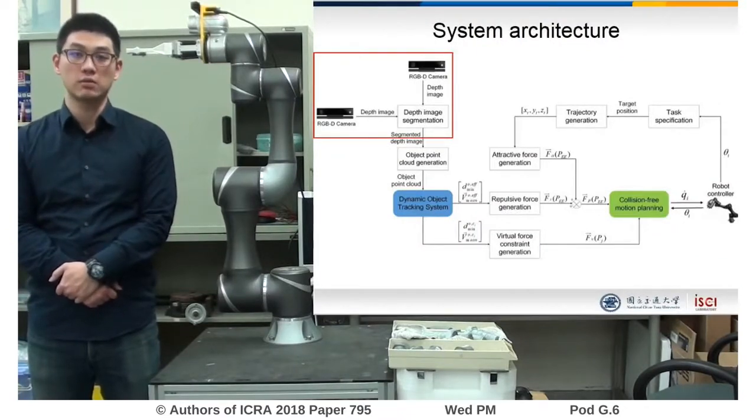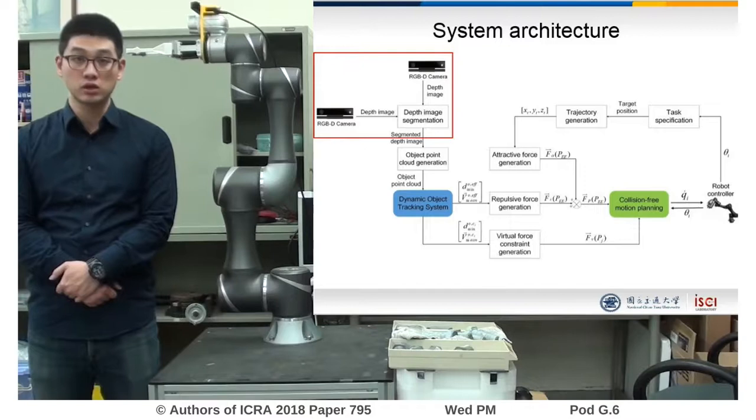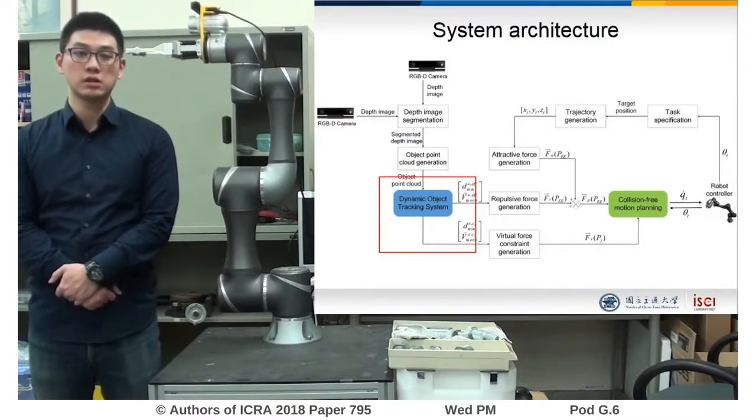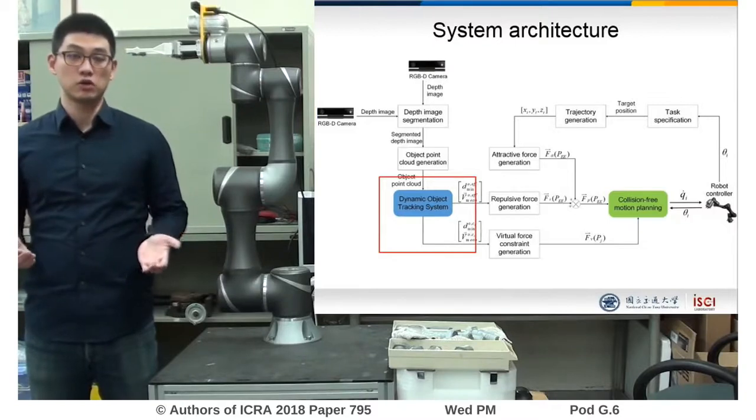Mobile connected video cameras are utilized to track and model dynamic obstacles inside the robot workspace. Our dynamic object tracking system can track real obstacles efficiently and provide sufficient information for motion planning.